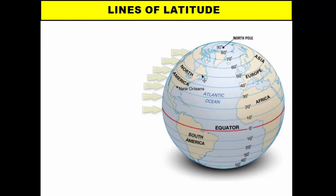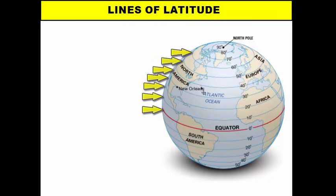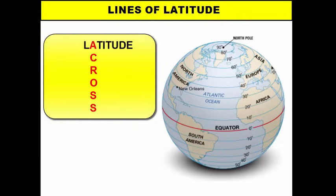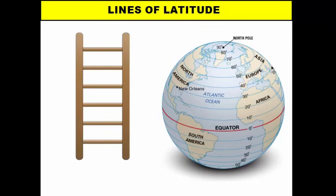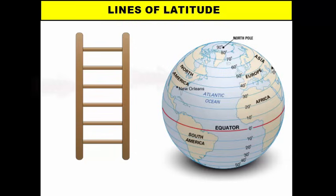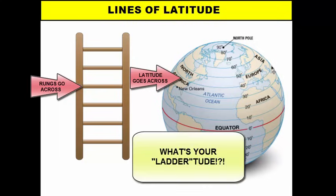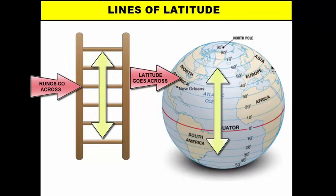Latitude lines are the lines that run across the map — from east to west. The easiest way to remember latitude lines: the A in latitude stands for 'across,' and latitude lines also look like a ladder. A ladder has rungs or steps that run across and don't touch each other, just like latitude lines on the globe. The rungs of the ladder also move up and down, just like the lines of latitude on a map.